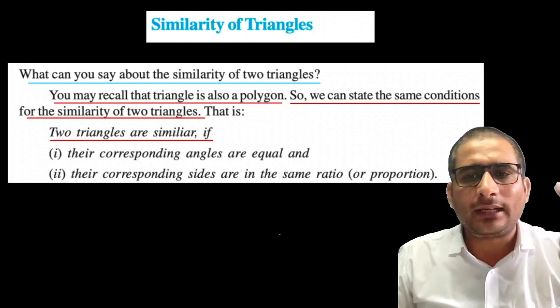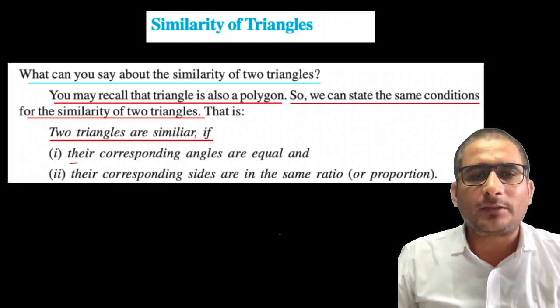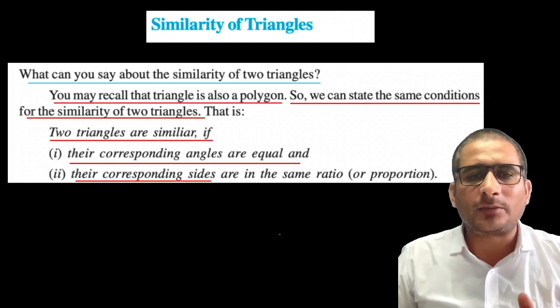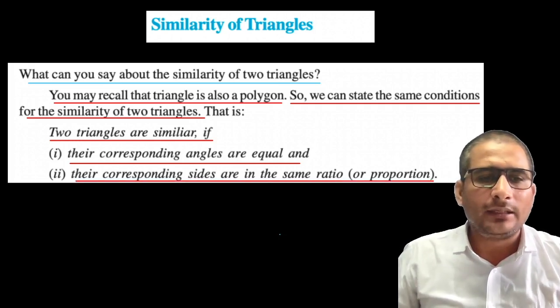Two triangles are similar if their corresponding angles are equal and the corresponding sides are in the same ratio.